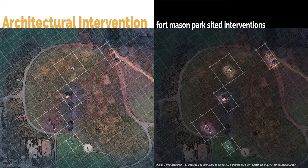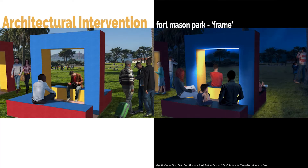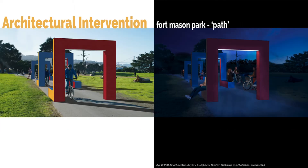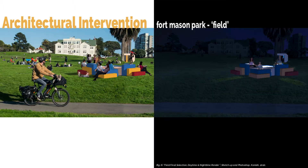The five human-scaled interventions were developed by iterating and developing human-scaled forms that respond to five key fundamental spatial characteristics that organize all parks. The five characteristics or spatial topologies are defined as: frame, enclosure, path, field, and slope.